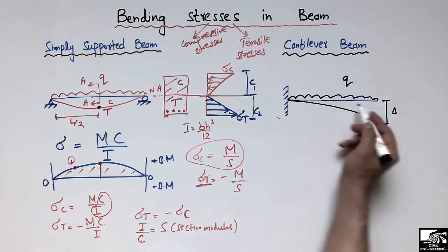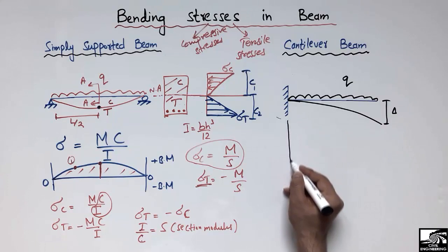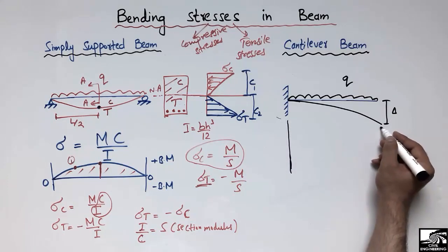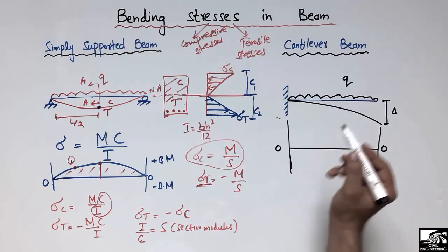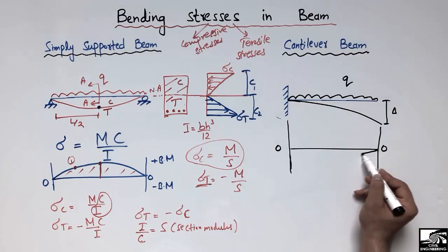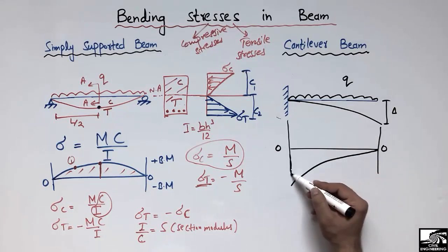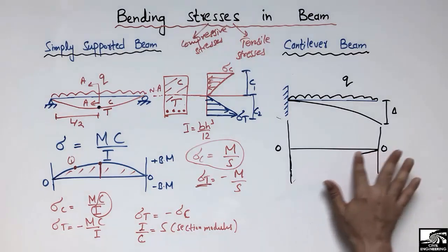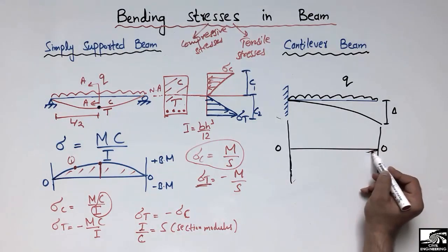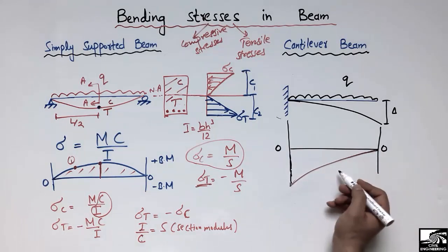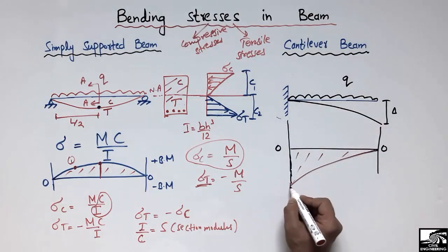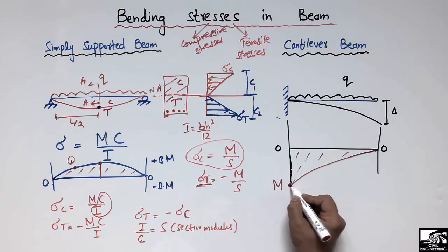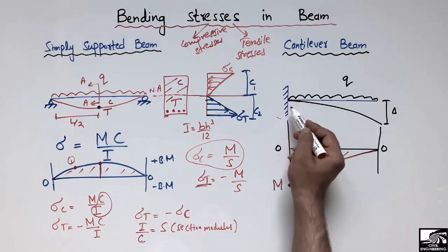Drawing the bending moment diagram for the cantilever beam using the reference lines, it will show maximum bending moment at the fixed support, because the fixed support can resist the moment. This is opposite to the simply supported beam which has maximum bending moment at midspan.